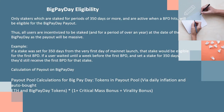Big Pay Day eligibility: only stakers who are staked for periods of 350 days or more, and are active when a BPD hits, will be eligible for the Big Pay Day payout. Thus, all users are incentivized to be staked for a period of over a year at the date of their Big Pay Day, as the payout will be massive. If a stake was set for 350 days from the very first day of mainnet launch, that stake would be eligible for the first BPD. If a user waited until a week before the first BPD and set a stake for 350 days, they'd still receive the first BPD for that stake.